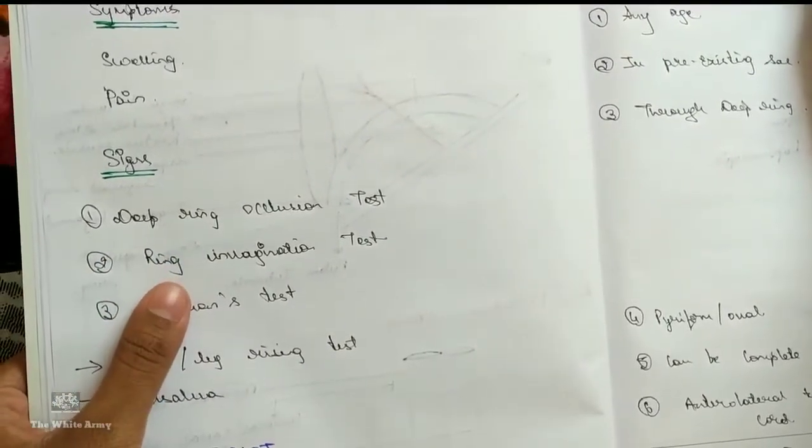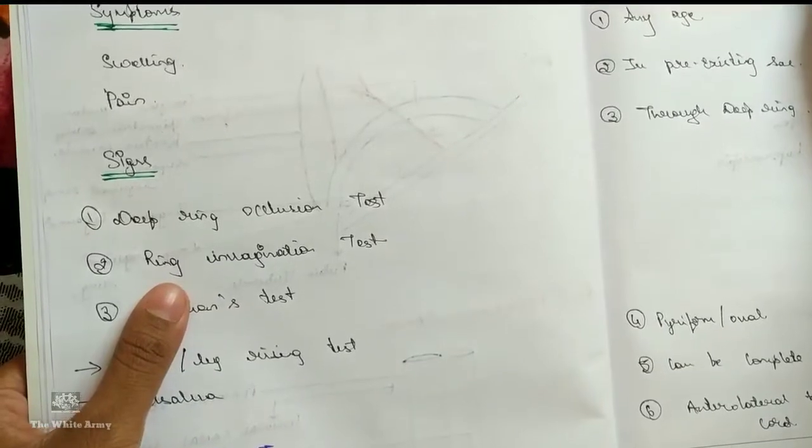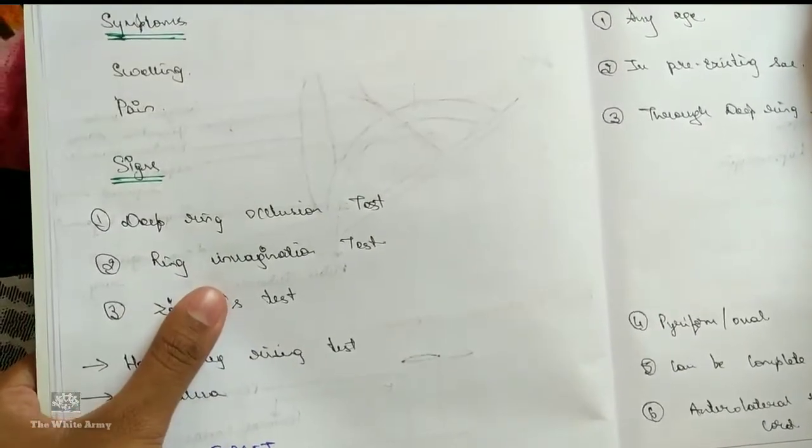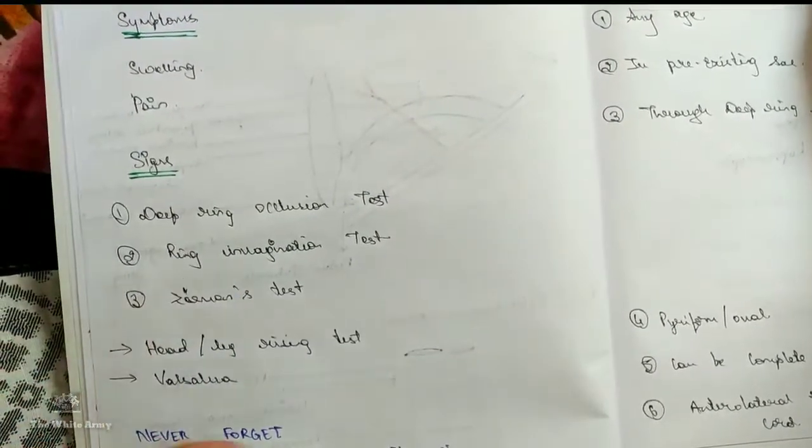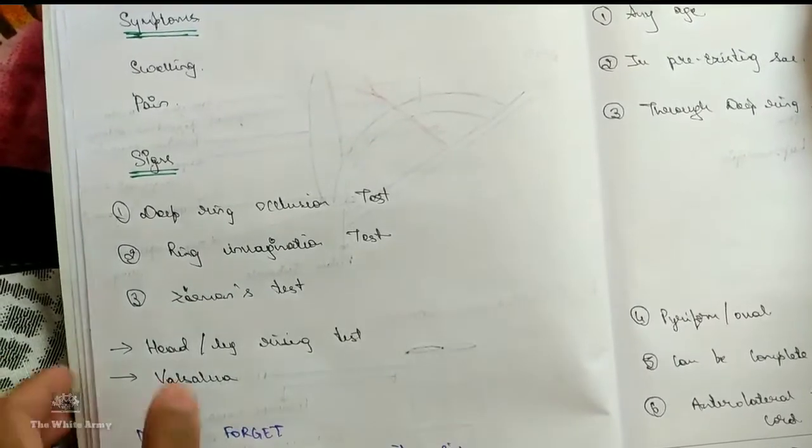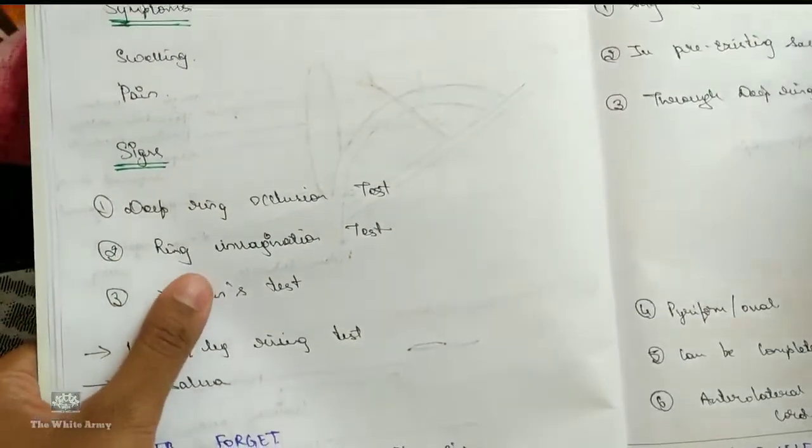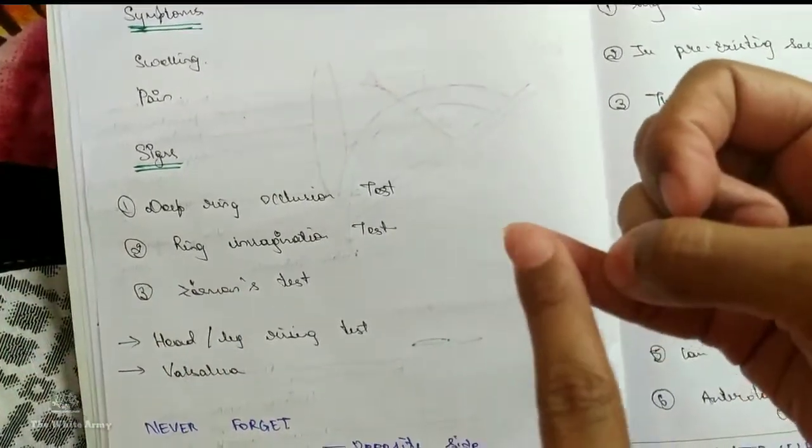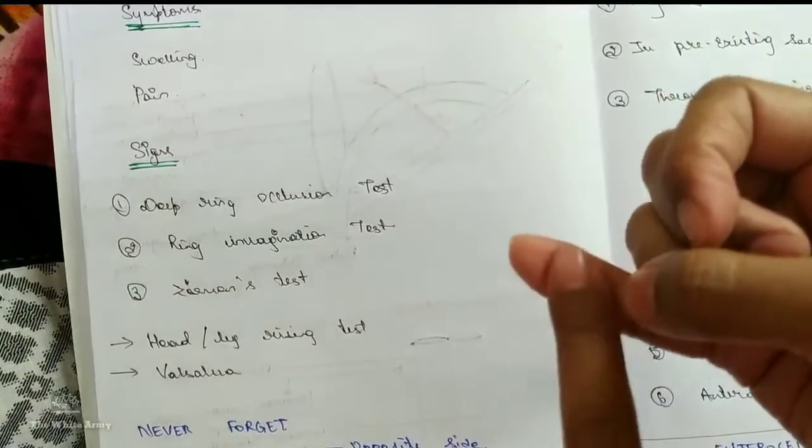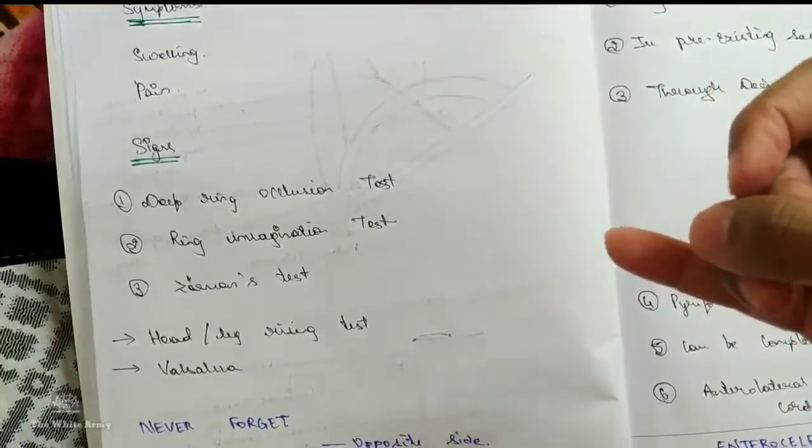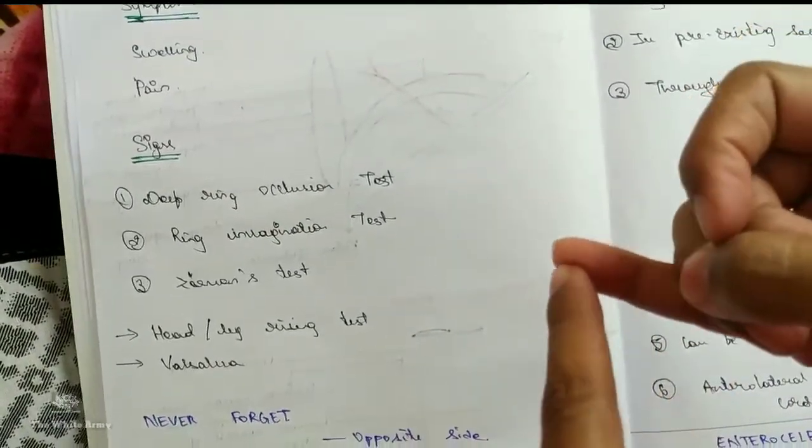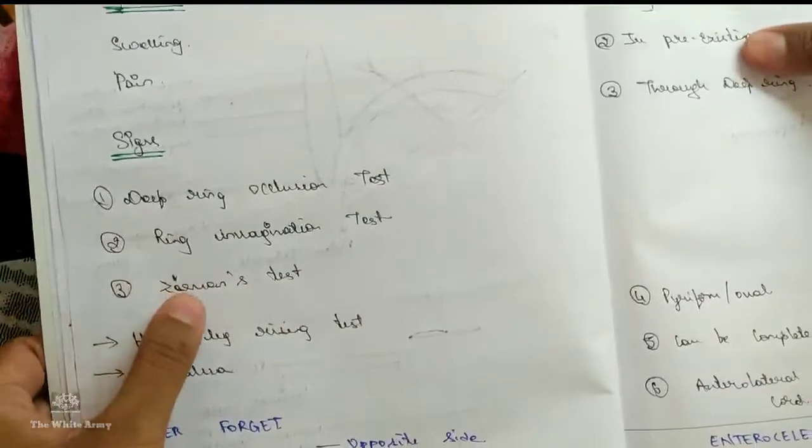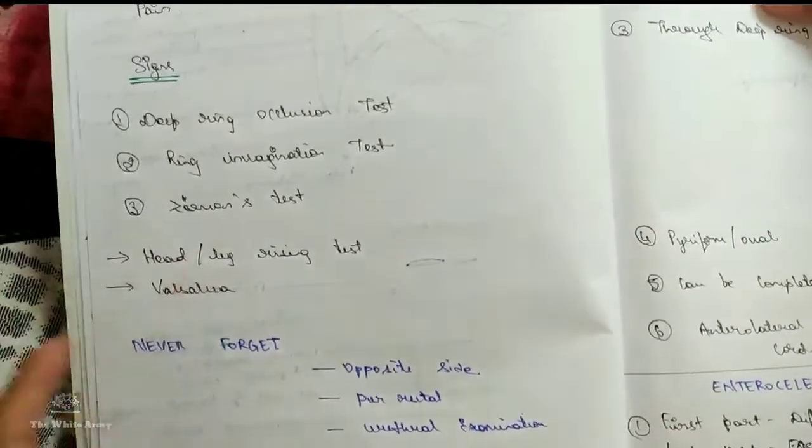Ring invagination hernia. A simple test using your little finger where you take a fold of skin through the scrotum and push the contents to the superficial inguinal ring. And if you feel the impulse after the person is asked to cough on your pulp, it means it is direct hernia. And if you feel the impulse on tip, it means it is indirect hernia.